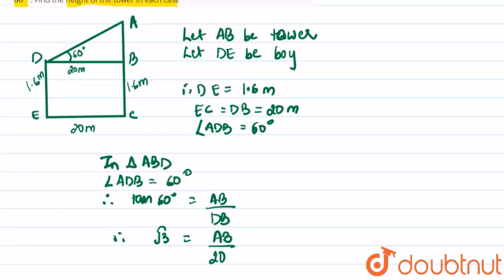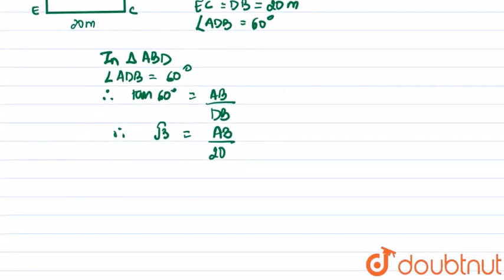Therefore, the value of AB equals 20 times root 3, which equals 34.64 meters.